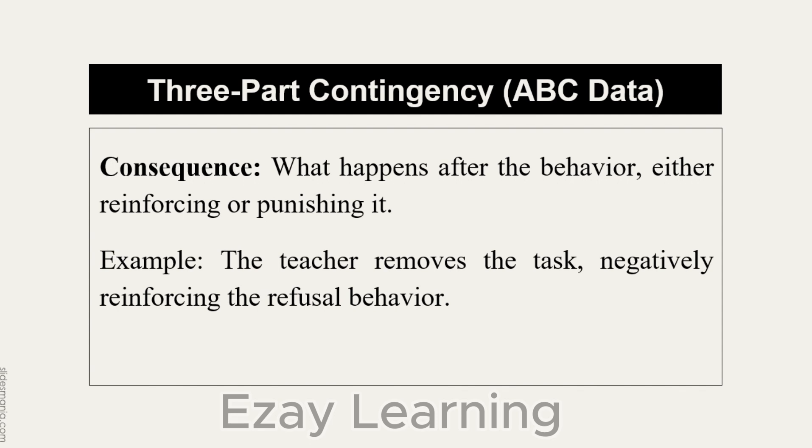That's how we use and record ABC data. We write the behavior, we write what happened before it — what was the trigger, what was happening in the environment before the behavior occurred. And for consequence, we write what happened right after the behavior. This is what three-part contingency is, this is what ABC data is. So if you are asked to write ABC data of any behavior, you will be writing the antecedent, behavior, and consequence of it.